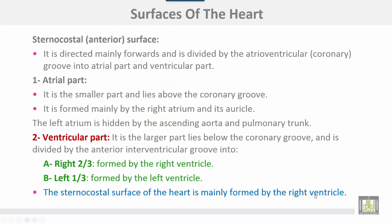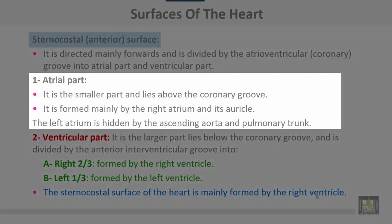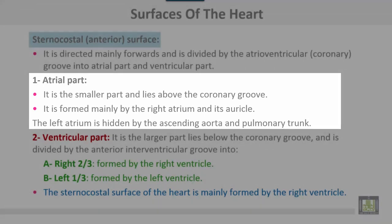The sternocostal surface of the heart, or anterior surface, is directed mainly forwards and is divided by the atrioventricular or coronary groove into an atrial part and a ventricular part. The atrial part is a smaller part and lies above the coronary groove. It is formed mainly by the right atrium and its auricle. The left atrium is hidden by the ascending aorta and the pulmonary trunk.